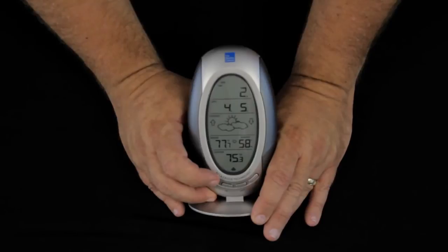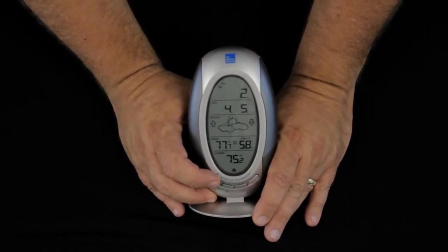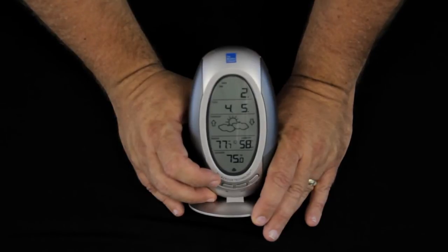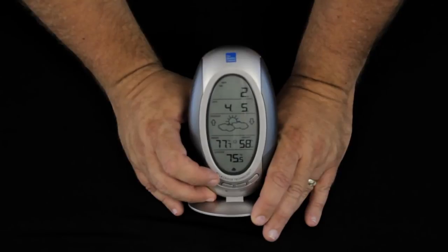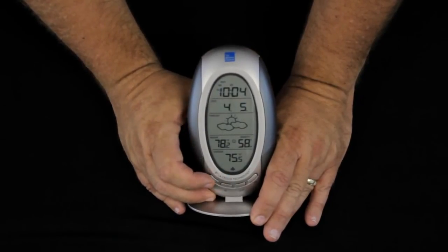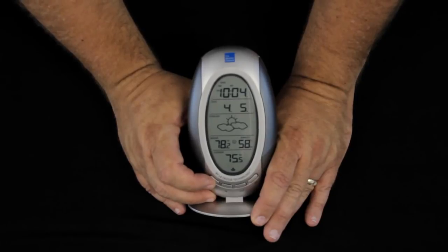And press the set button once again. Forecast tendency is 2. 85 percent of the country is going to use 2. If you're near the ocean, right on the shorelines, you're going to typically use 1. Folks in the desert are going to typically use 3. And that is controlled with the in button. After a few seconds, the system goes back to normal. It's completely set up and operating.